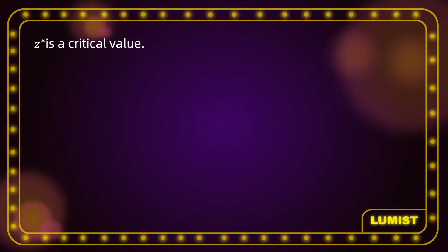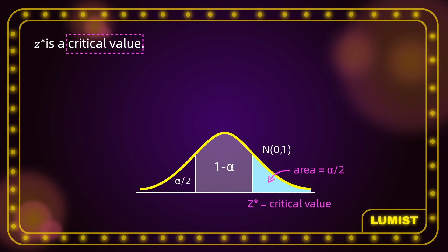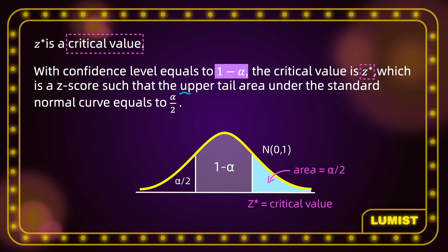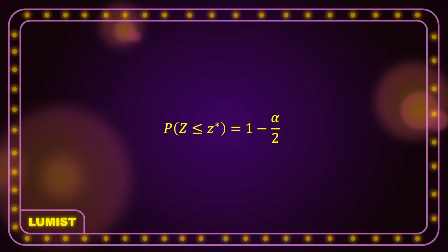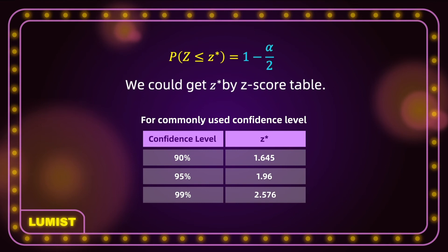The z* is a critical value, which we covered in our earlier video. It's the same critical value used in population mean with known standard deviation, because the sampling distribution of sample proportions is approximately normal. With confidence level equal to 1 minus alpha, the critical value z* is the z-score such that the upper tail area under the standard normal curve equals alpha divided by 2. The probability that z is less than or equal to z* equals 1 minus alpha over 2. We can get the critical value from the z-score table. Here's a table for commonly used confidence levels — it's important to keep these in mind because it makes finding confidence intervals a lot easier and faster.